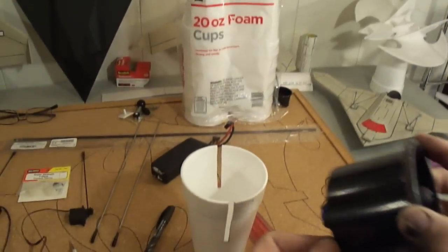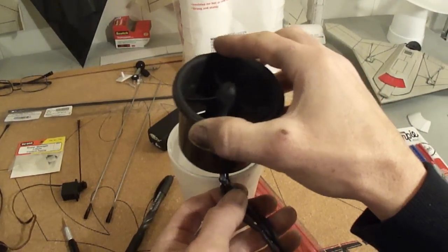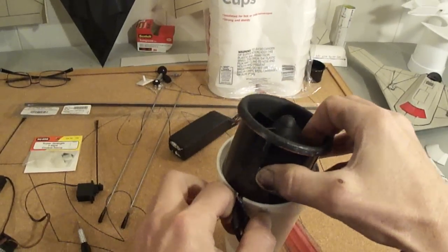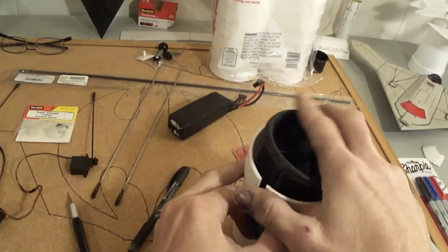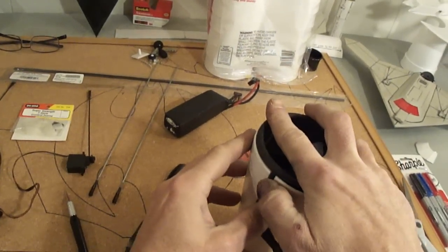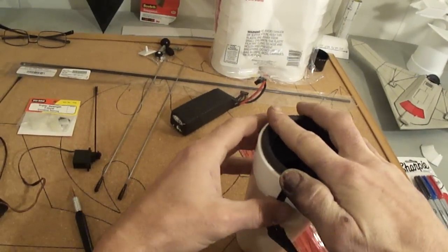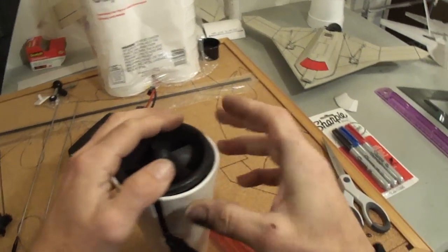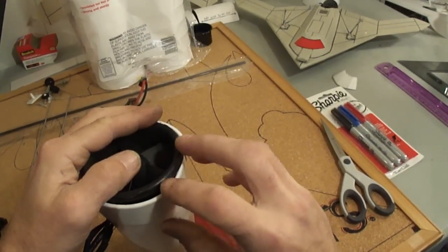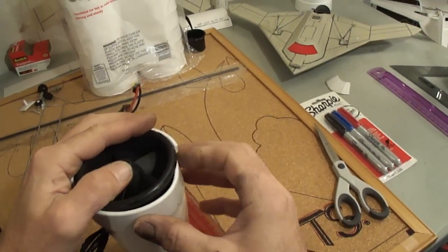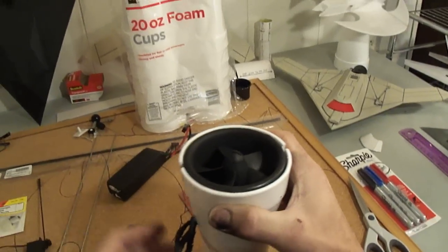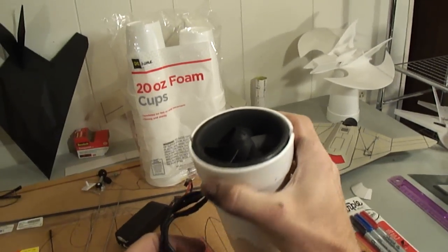I'll just go ahead and do that right now. I'll just feed my wires down through there. Line your EDF unit up. Make sure you get it in there. This foam is going to wrap right around to the front, just the leading edge of your EDF unit. Just like so guys.